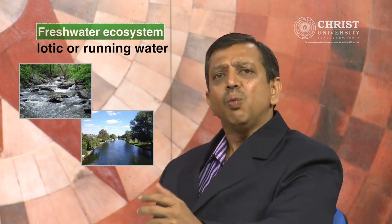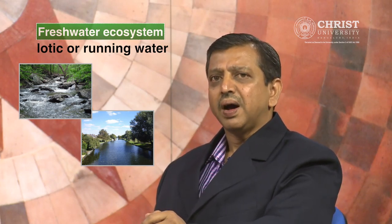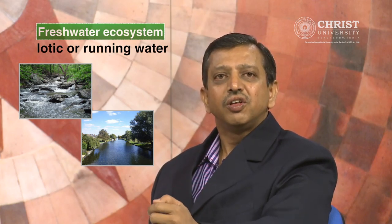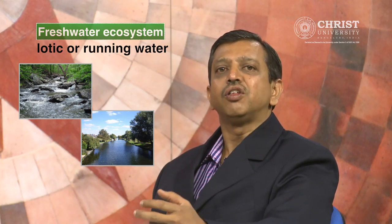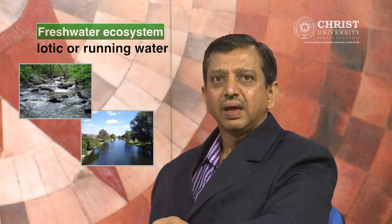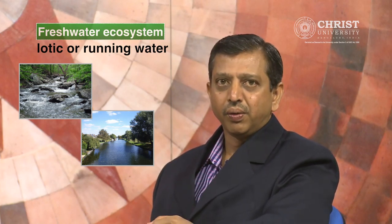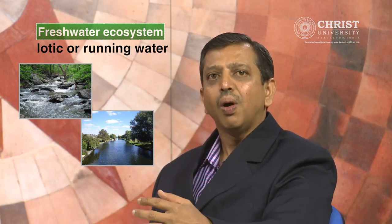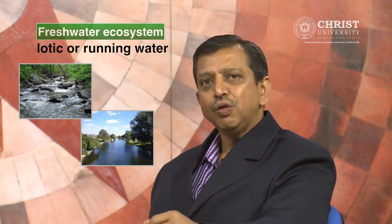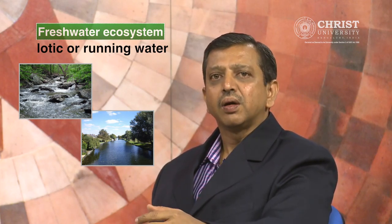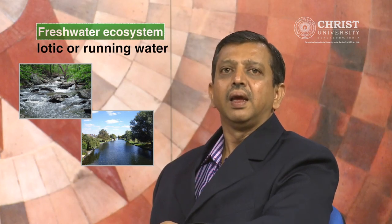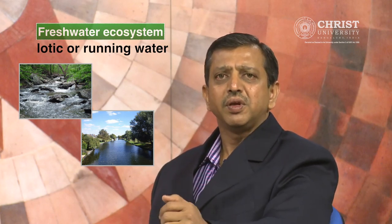The lotic or running water ecosystem is represented by rivers and streams. They are well oxygenated as they have a large surface area to absorb oxygen. Minerals are lesser and light penetration is more. In lower reaches, water is generally muddy, cutting down light penetration. The producers of the biotic components are phytoplanktons, attached algae, water grasses and amphibious plants.